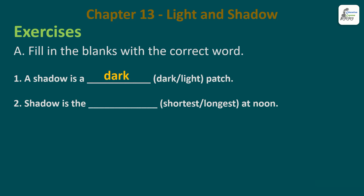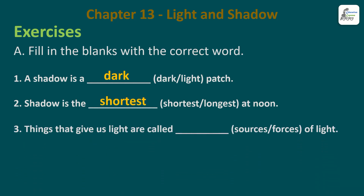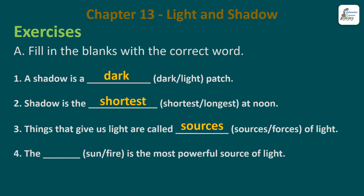Then, a shadow is the ___ shortest or longest at noon. Noon means midday. What is the most small at noon? Shortest. Third one: Things that give us light are called ___ - sources or forces? Sources of light. A shadow is formed on the opposite side of the light source. Fourth: The ___ sun is the most powerful source of light. What is the most powerful source of light? Sun. Fifth one: We cannot see anything in a lit or dark room - which room? We will not see in the dark room. Lit means light.